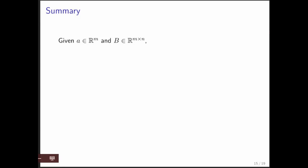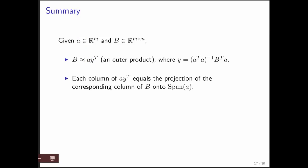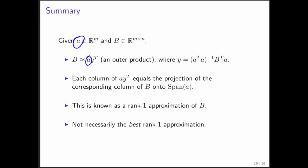So in summary, if we're given a vector a and a matrix b, then we can approximate our matrix b as an outer product with the vector a. And the best such approximation, given that we fix that vector a, involves this vector y, which is computed as such. Each column in a times y transpose in this outer product equals just the projection of the corresponding column of b onto the span of a. And this is known as a rank one approximation of b. And in one of the exercises, you will be asked to prove that this matrix has rank one. Notice that this is not necessarily the best rank one approximation. It is the best rank one approximation if you fix your a to be the column vector in the outer product.